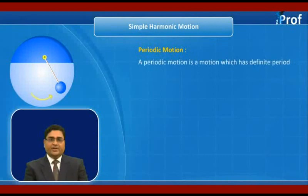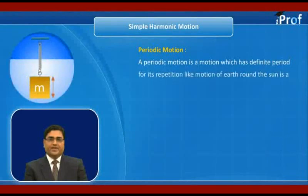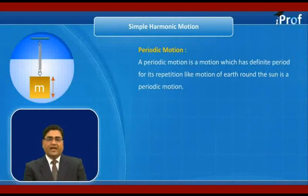A periodic motion is a motion which has a definite period for its repetition — a motion that repeats itself in a definite time interval. The motion of Earth around the Sun is an example of periodic motion.